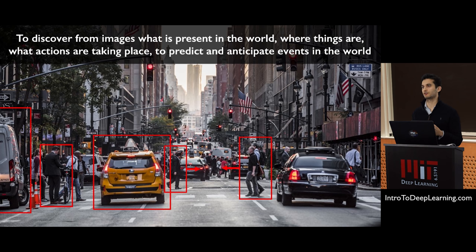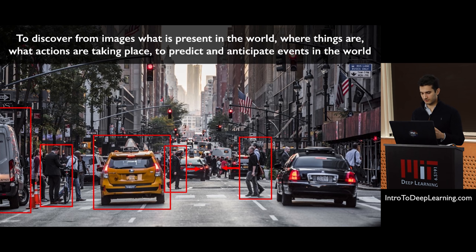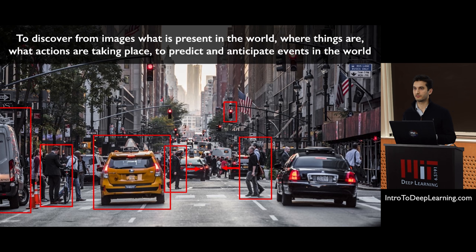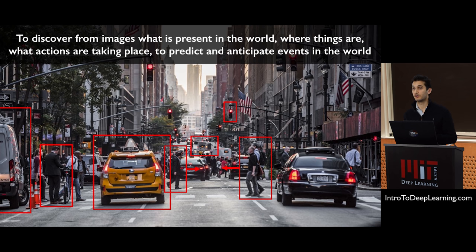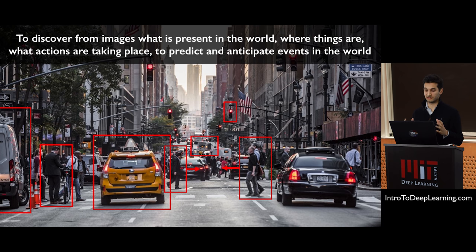This is an extraordinarily challenging problem in the real world. Building true vision algorithms requires reasoning about all of these components — not just the foreground, but also important cues in the background like traffic lights and obstacles in the far distance. Building these vision algorithms really does require an understanding of all of these very subtle details.